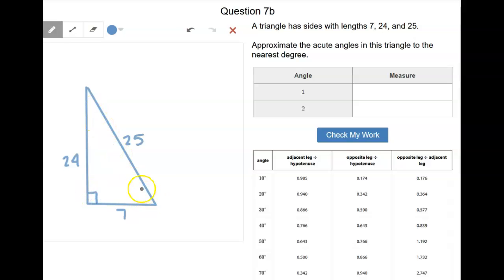We know that these two are going to have to add up to 90, but we have to use these side lengths to figure out what the angle measures are first.